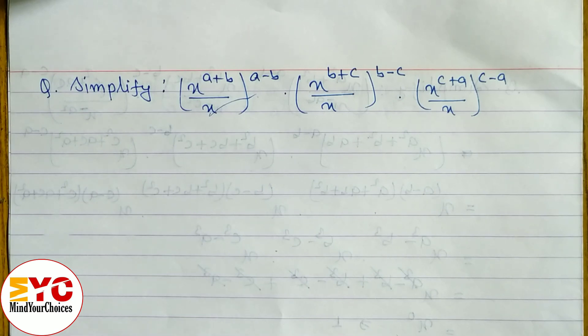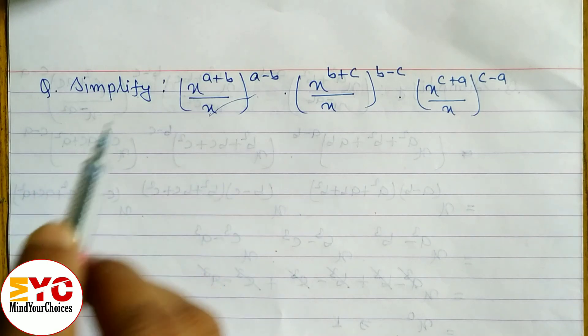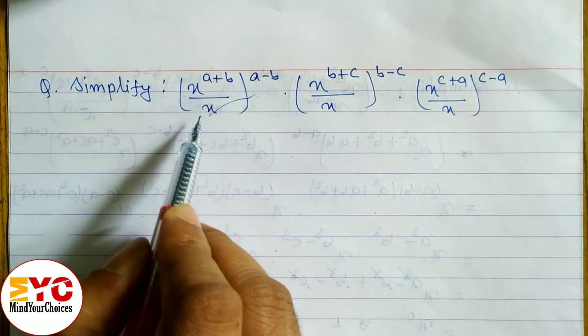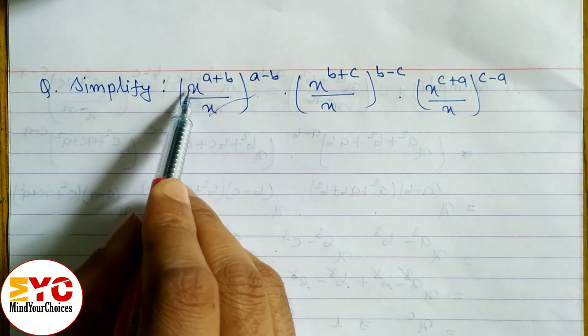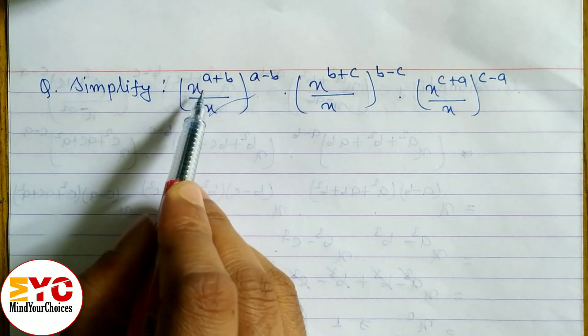We need to simplify, which is very important for SE students and board students. In question one, we have to use the law of indices — base same and divide.